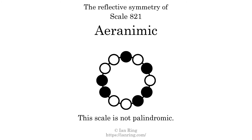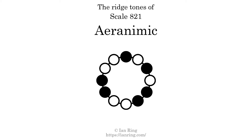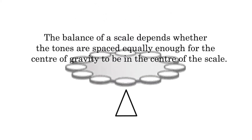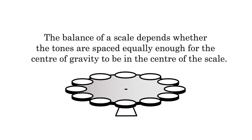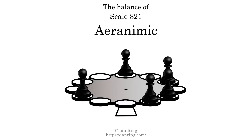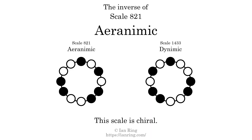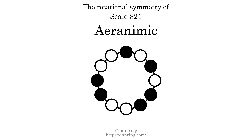This scale has no reflective symmetry. This scale has a different pattern of intervals ascending and descending, so it is not palindromic. This scale has no ridge tones. The balance of a scale depends on whether the tones are spaced equally enough for the center of gravity to be in the center of the scale. This scale is not balanced. The inverse of a scale is a mirror image — it is what you get when the sequence of intervals is reversed. The inverse of this scale is scale 1433, also known as Dynamic. This scale is chiral; it cannot transform into its inverse by rotational transformation. This scale has no rotational symmetry.